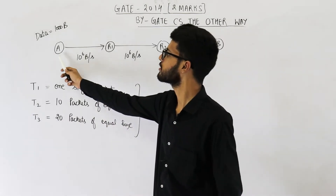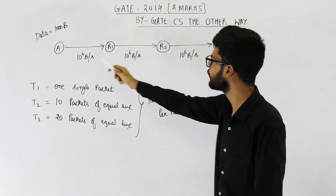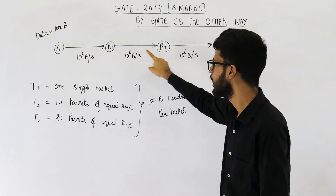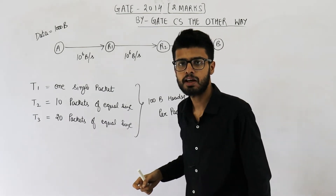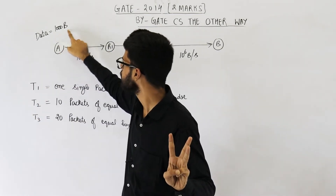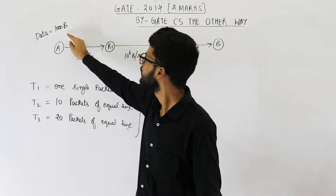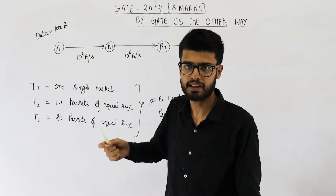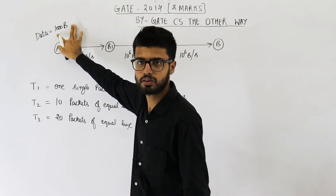Host A wants to send 1000 bytes of data to host B. Both machines A and B are connected via two routers R1 and R2, and the bandwidth of these links is 10^6 bytes per second. The question talks about three cases: case one sends the 1000-byte file as one packet, case two creates 10 packets of equal size, and case three creates 20 packets from this data.